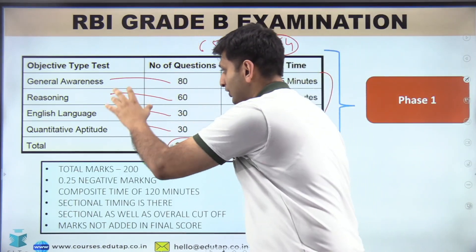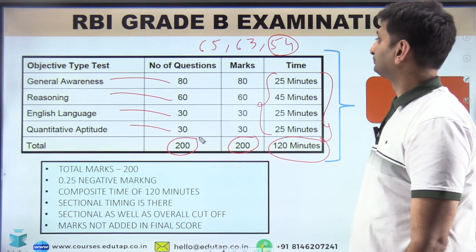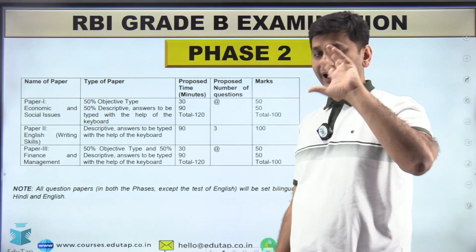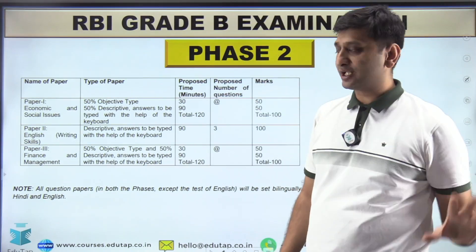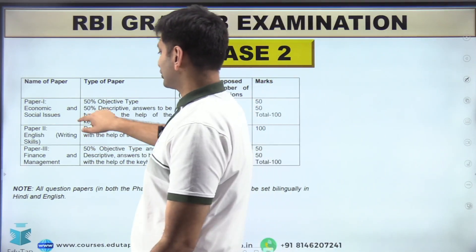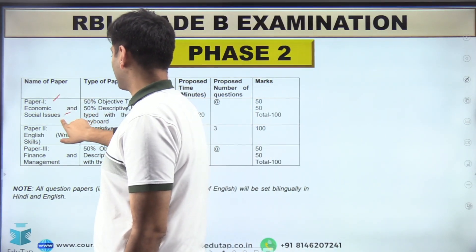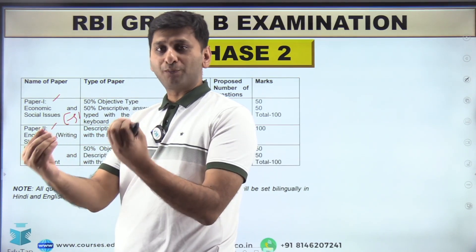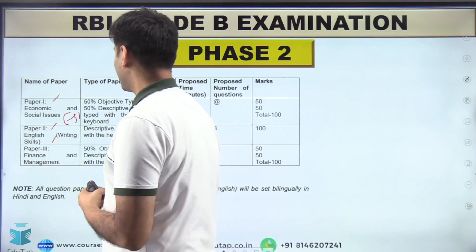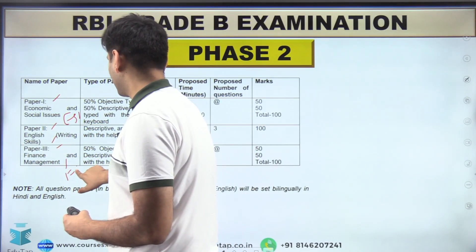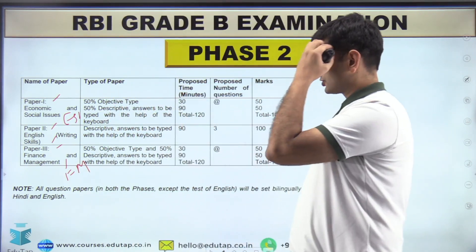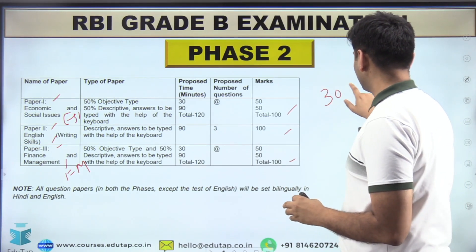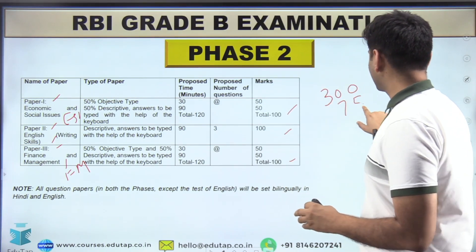Phase two has a completely different pattern compared to other exams. There are three papers: Paper one is Economic and Social Issues (ESI), paper two is descriptive English where you write essays, comprehension and precis writing, and paper three is Finance and Management (FM).